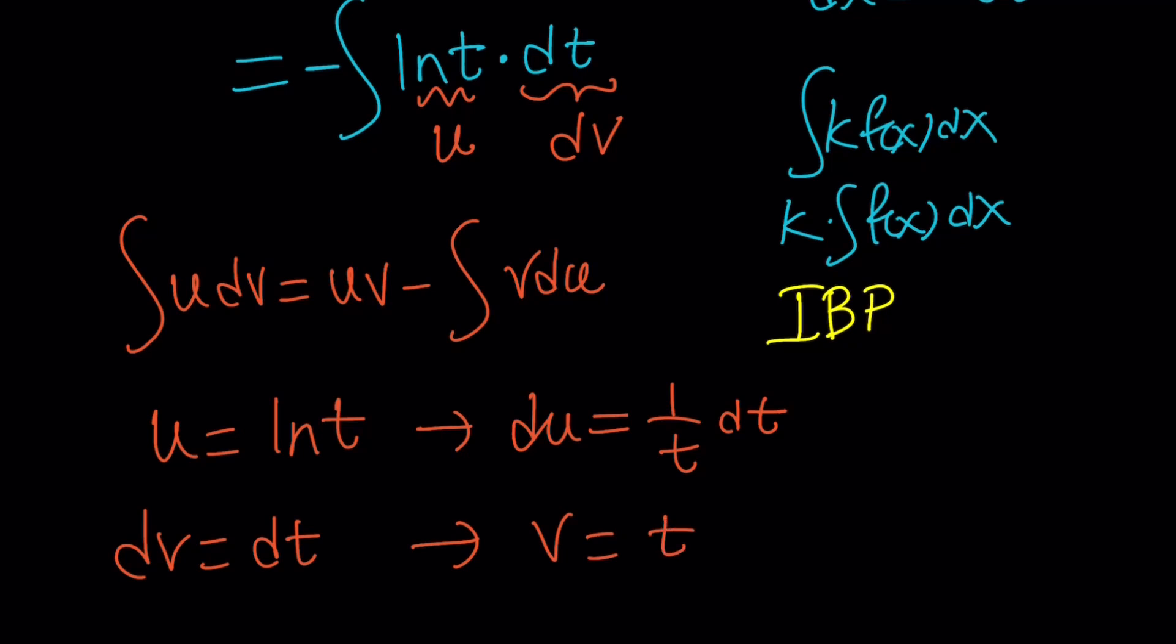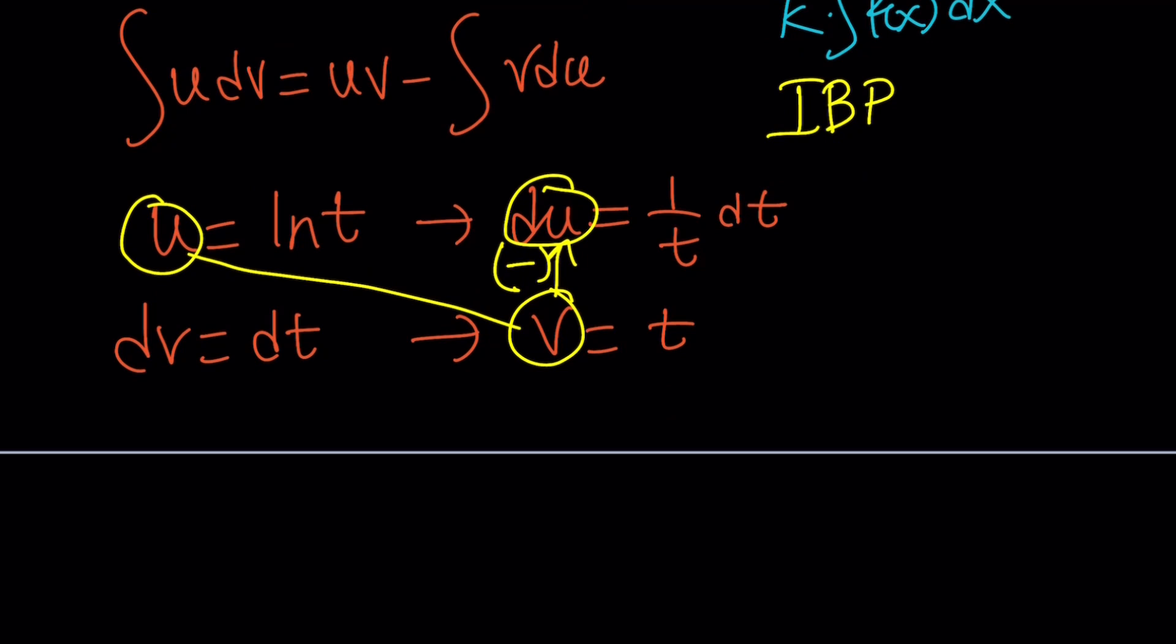Don't worry about the constants. We're going to put that at the end. So now, we kind of need to put these together because it's UV minus, don't forget the minus sign, VDU. Okay? So we're going to multiply. This integral is going to equal. By the way,